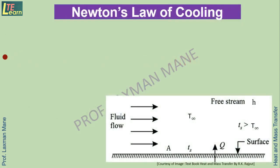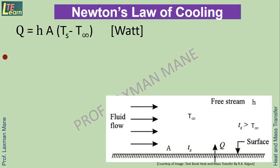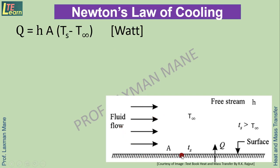Newton's Law of Cooling: By this law, the heat transfer rate is given by the equation Q is equal to H into A into bracket Ts minus T infinity. The unit of heat transfer rate is Watt. Here in this diagram, fluid flow passing over the hot surface is shown.